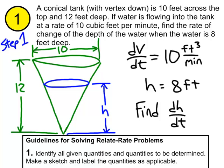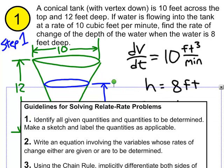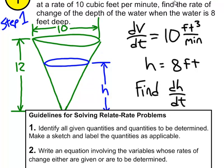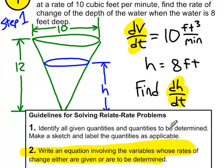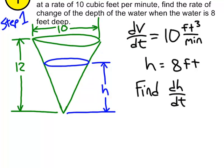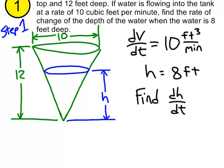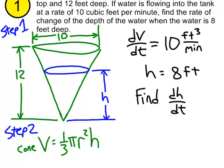Step two says to write an equation involving the variables whose rates of change either are given or are to be determined. We need an equation that relates V and h. Step two is never a calculus equation — it's typically geometry. The relationship between volume and height for a cone: the volume of a cone is one-third pi r squared h. You'll usually be given that, but it's not a bad one to know.